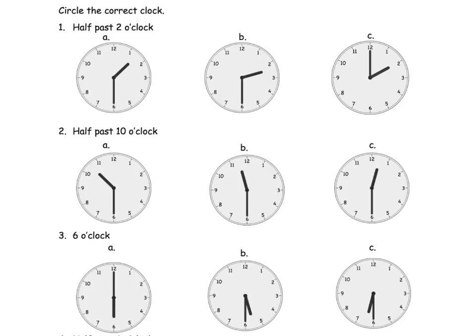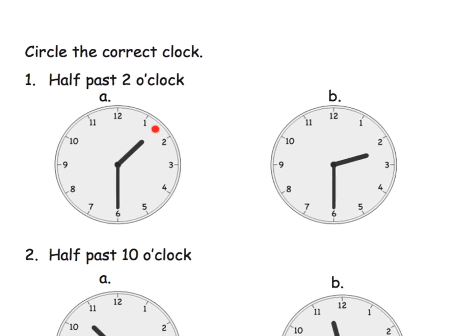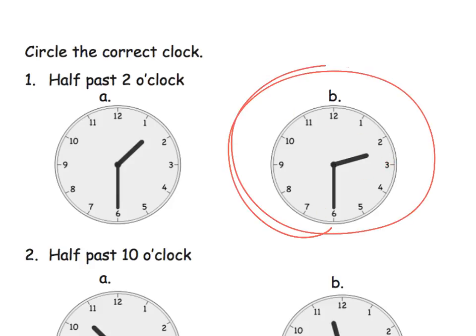Here we want students to circle the clock that correctly says half past 2. We see the minute hand is halfway around on two of the clocks, but not on the third — where the minute hand is at 12, so we cross that one off. Zooming in, one clock shows half past 1 because it's past the 1 but not to the 2. The other is past the 2 and not quite to the 3, so that one is half past 2.